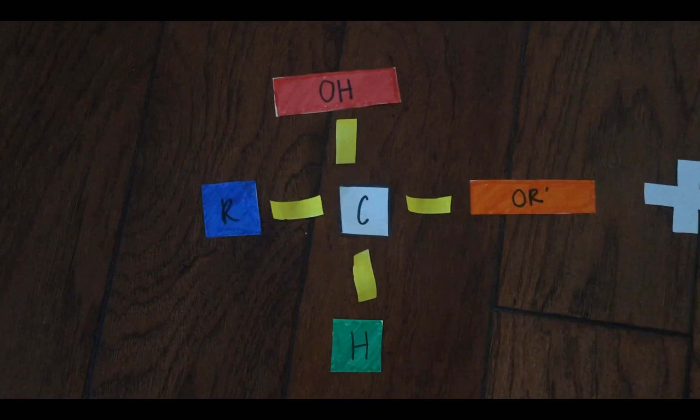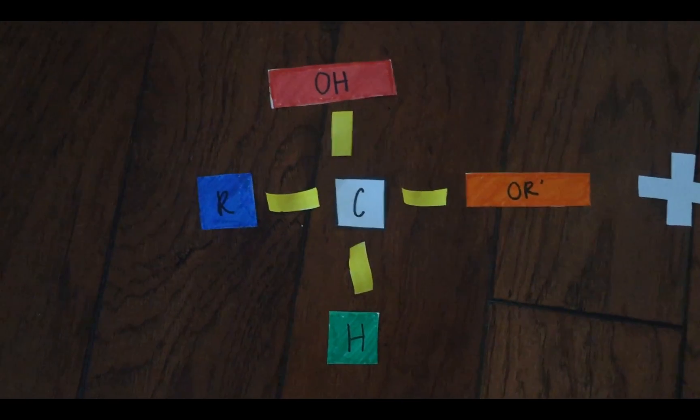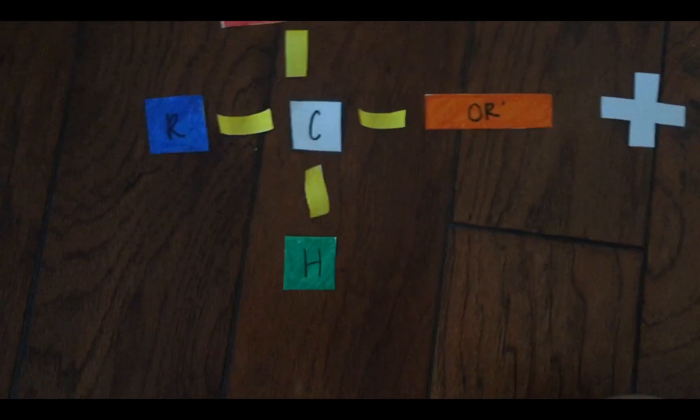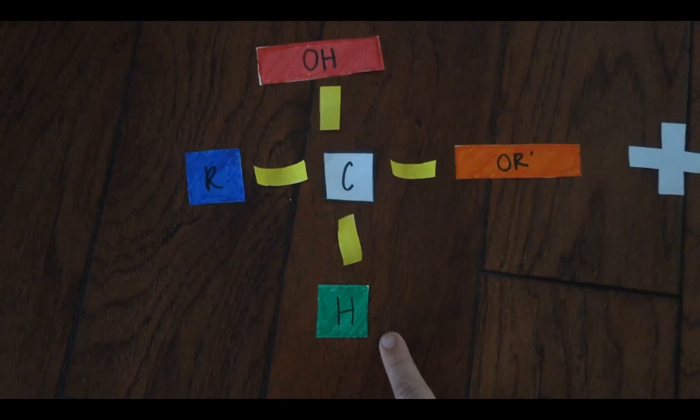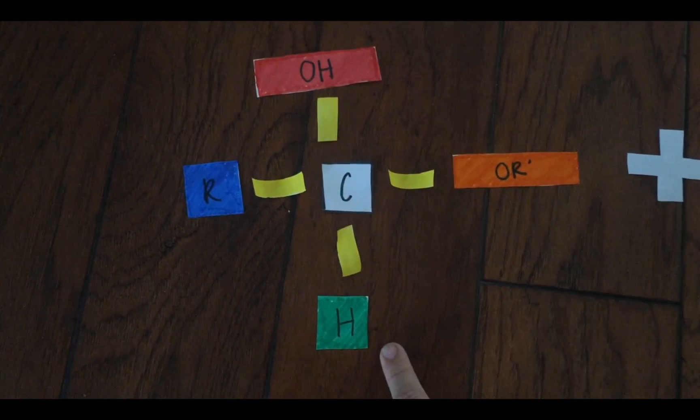Hemiacetal molecules contain an OH, an OR, an R, and an H group, all attached to a carbon. Note that this H below here could also be an R group in some instances.